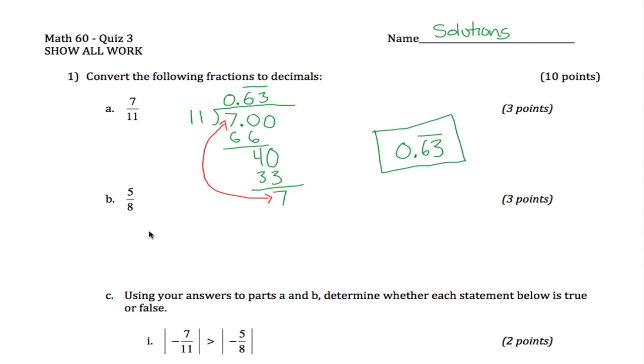Same idea here with 5 eighths. Take the number on the bottom, put it on the outside. We can't get 8 into 5, but what we could do is get 8 into 50. So 8 times 6 is 48, gets us close. 50 minus 48 is 2, not 0, not repeating, so we continue. 8 goes into 20 twice, gets us 16. You might be worried that I'm running out of room, but you don't have to worry.